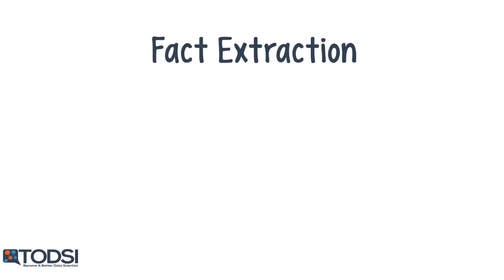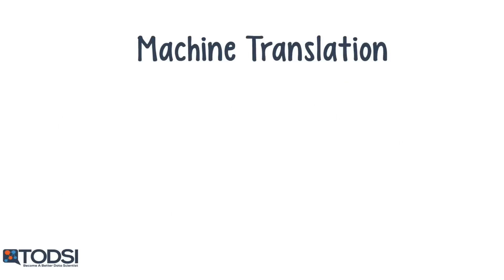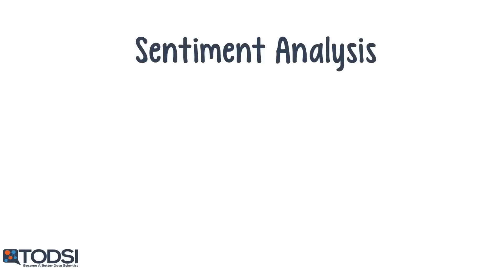Deep net parsers can be used to extract relations and facts from text, as well as automatically translate text to other languages. These nets are extremely useful in sentiment analysis applications, and can be used as part of movie ratings and new product intros. Here is a quick demo of MetaMind, an RNTN that performs sentiment analysis.